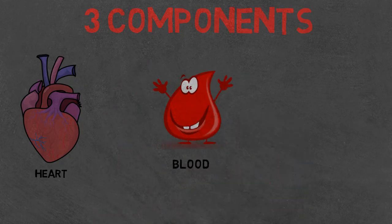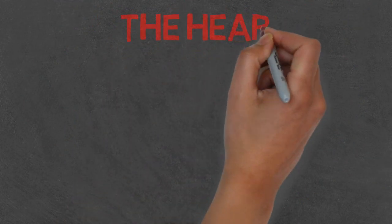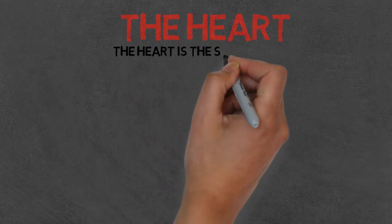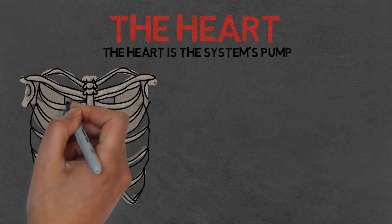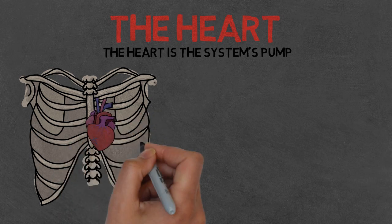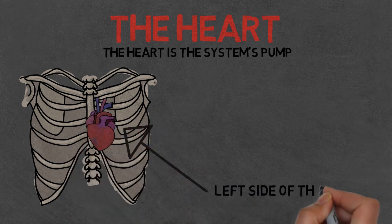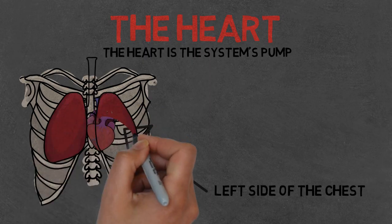Now I know you already know what the heart does but I'm going to tell you anyway. The heart is the system's pump and its main job is to pump all five litres of blood around the body through blood vessels to tissues and cells. The heart is located on the left side of the chest just below the lungs and is about the size of your fist.